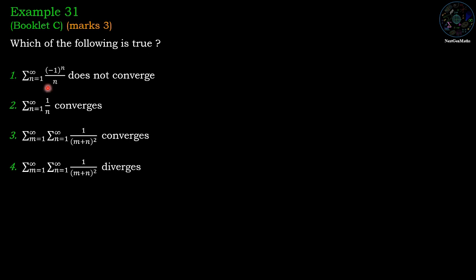Which of the following is true? First option: sigma n=1 to infinity of (-1)^n / n does not converge. Second option: sigma n=1 to infinity of 1/n converges. Third option: sigma m=1 to infinity sigma n=1 to infinity of 1/(n + n^2) converges. And the fourth option: the same series diverges.